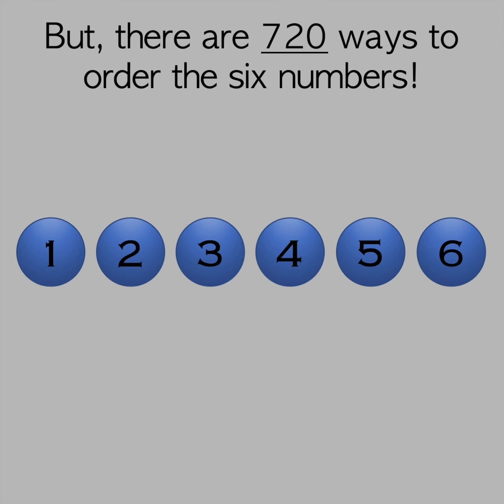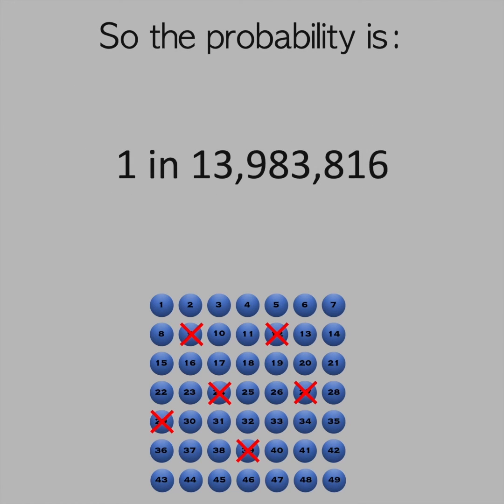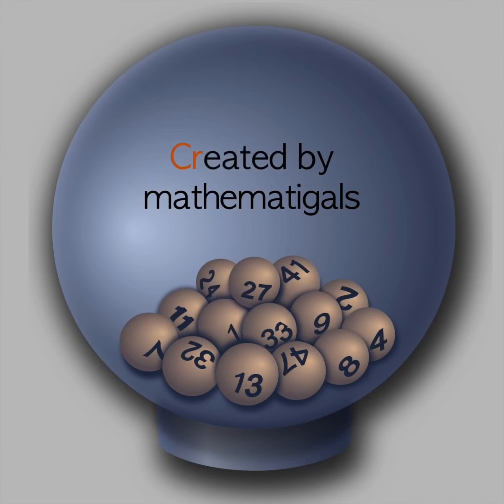Because order doesn't matter, your numbers could come up in 720 different combinations, making your chances 720 times more likely. We calculate the probability of winning the lottery to be 1 in 13,983,816. So you're 14 times more likely to be struck by lightning.